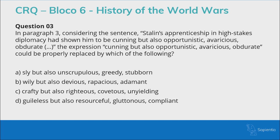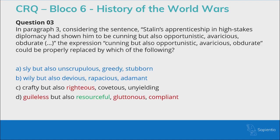Number three — paragraph three: 'Stalin's apprenticeship in high-stakes diplomacy had shown him to be cunning, but also opportunistic, avaricious, obdurate.' The expression could be replaced by which of the following? We have a group of four adjectives describing Stalin, and we need a replacement group that maintains the same meaning. Looking vertically: 'sly,' 'wily,' and 'crafty' all carry the idea of taking advantage of a situation. 'Guileless' is the opposite — it means very honest, not cunning.